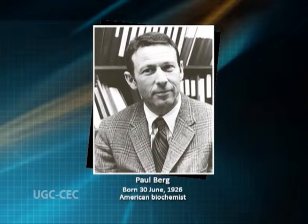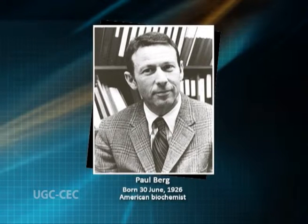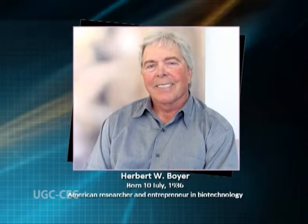The Needleman-Wunsch algorithm was developed in 1970 by Sol B. Needleman and Christian D. Wunsch. It is widely used for protein or nucleotide global alignment in bioinformatics. In 1972, Paul Berg made the first recombinant DNA using ligase. Stanley Cohen, Annie Chang and Herbert Boyer produced the first recombinant DNA organism in the same year. Agarose gel electrophoresis of DNA by Joseph Sambrook and DNA cloning by Herbert Boyer and Stanley Cohen were the two main events of 1973.